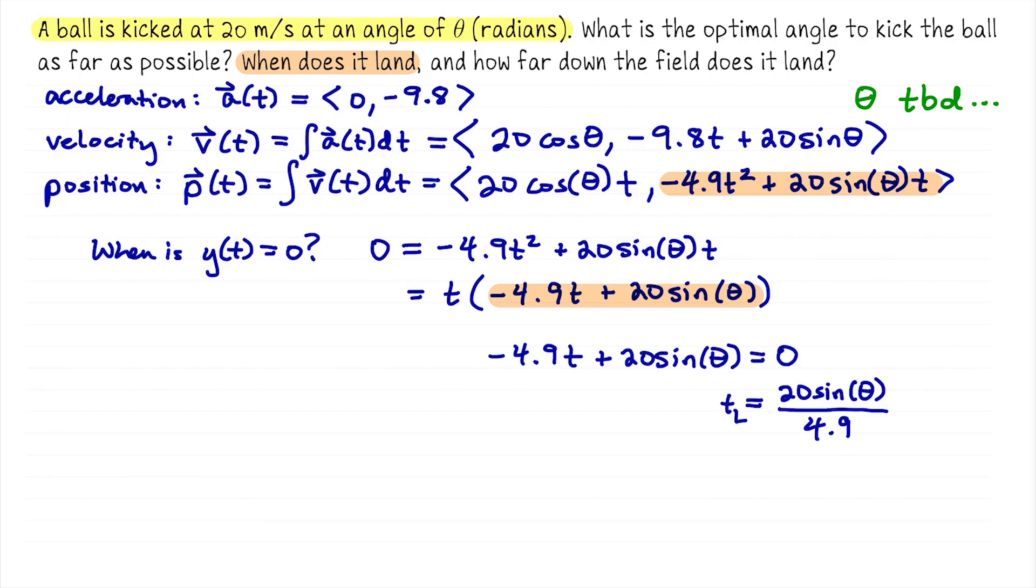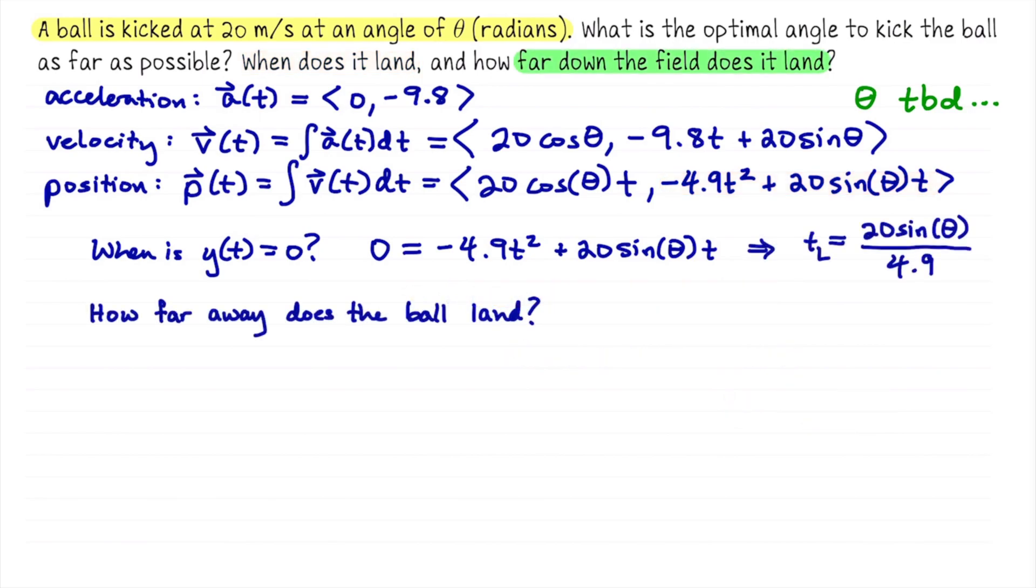Otherwise, I'm going to give us some more space to figure out how far down the field does it land is asking for us to find information about the x-coordinate. So that's this first coordinate. We want to know what that x-coordinate is when the ball lands on the ground. So that's like saying just evaluate x(t sub l). That's 20 cosine of theta. Now for t, I'm going to plug in 20 sine of theta divided by 4.9.